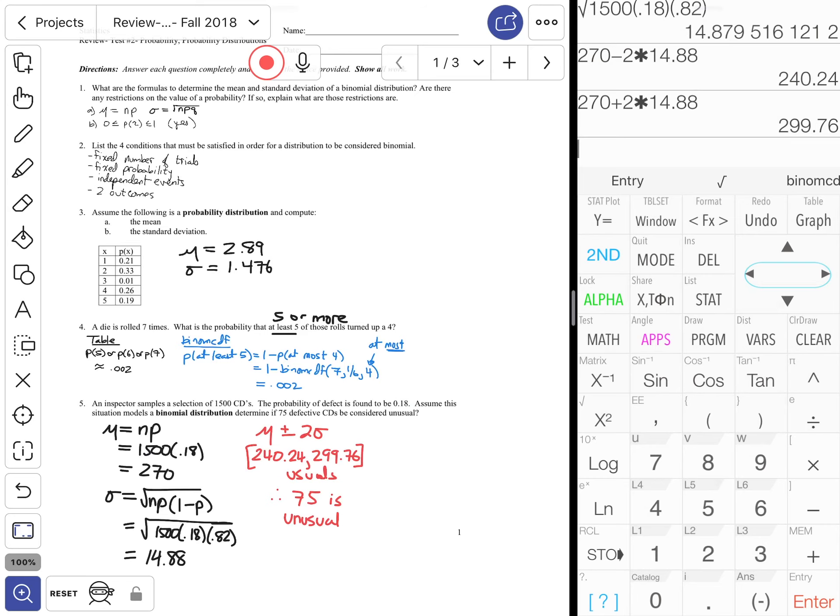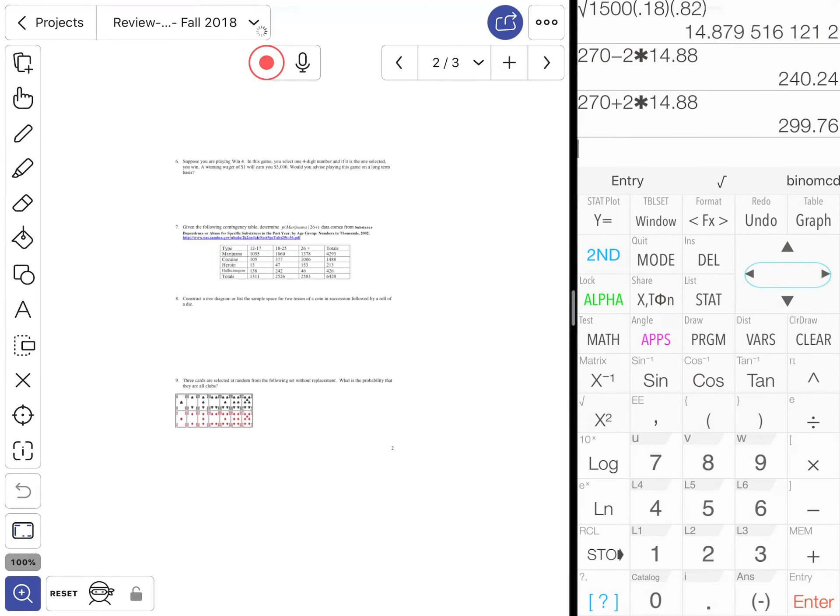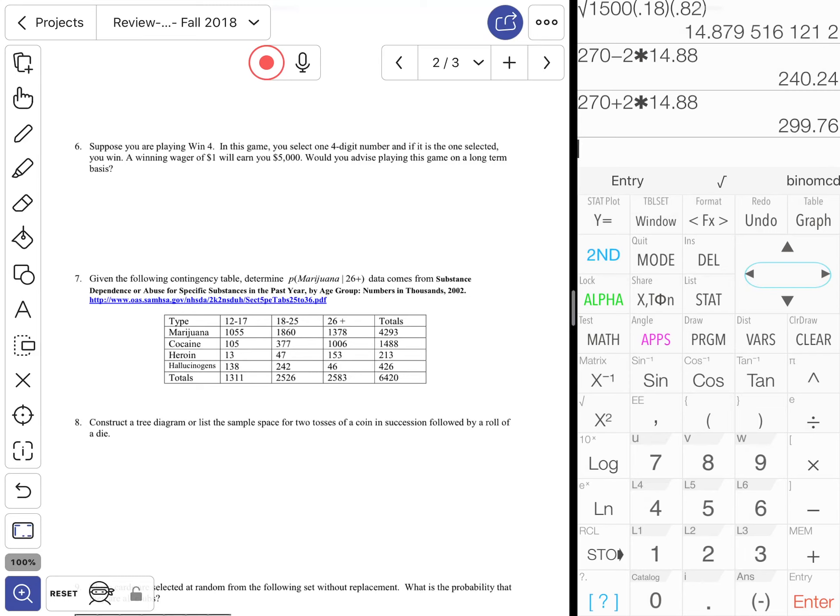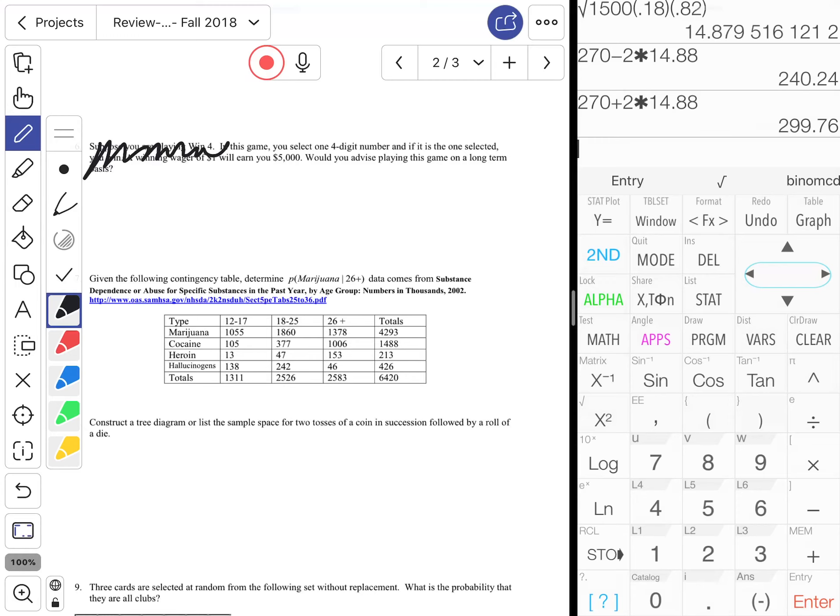Therefore 75 is unusual, does not fall in that interval. It's not between the numbers 240-ish and 299. So first five questions in the books. Number six, just like in the last video these expected value questions we save this for a tech assignment. We'll talk more about that after the second unit test, so that's tossed.